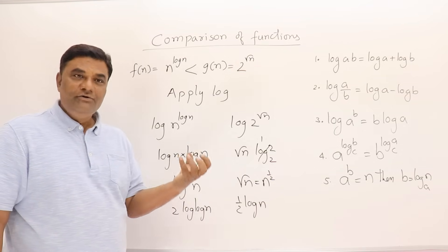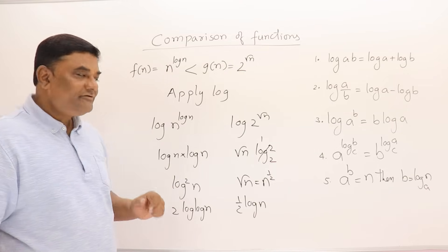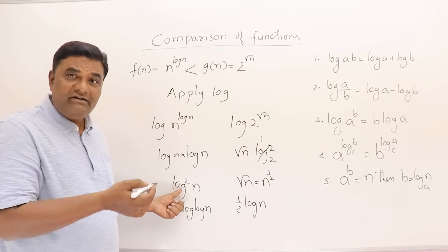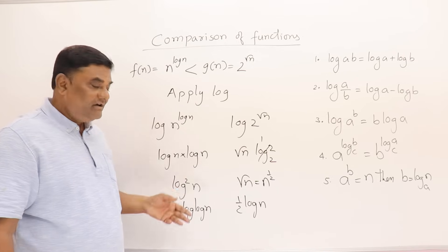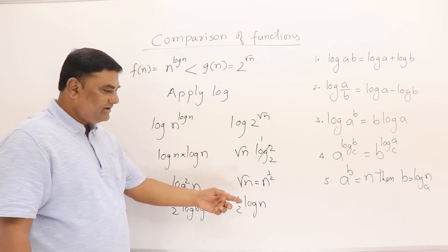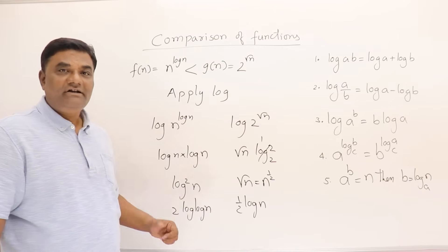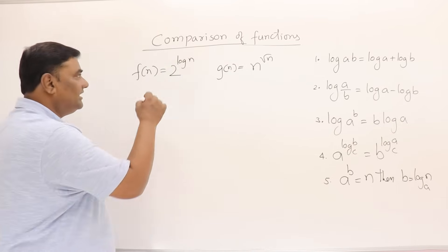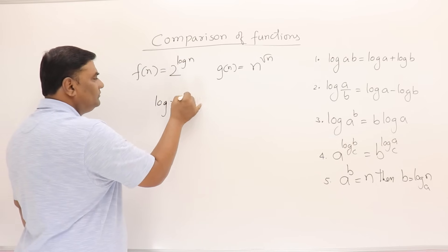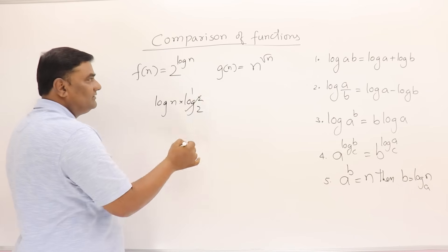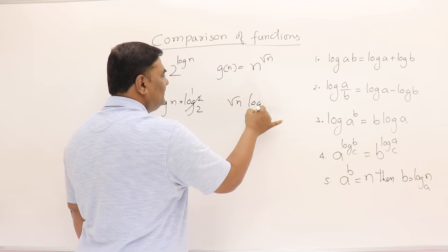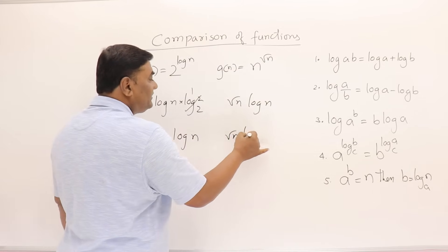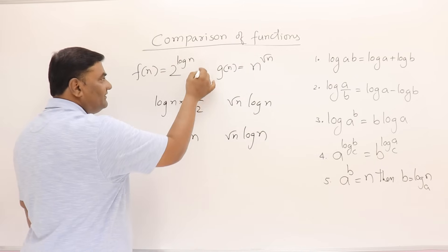We apply log to reduce and easily compare the functions. After one application we were still confused between log² n and √n, so we applied log again and got log(log n) vs log n. Since log n is greater than log(log n), √n is the greater side. Going back to the original comparison: log² n on one side and √n · log n on the other — √n · log n is greater, so n^(log n) is smaller.